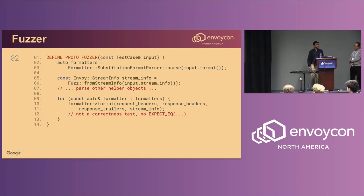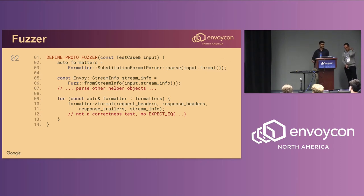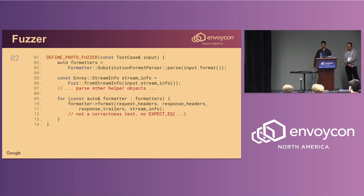Now we fuzz the data path. We translate the shims from the input schema into native Envoy objects like the stream info object, using utilities in the Envoy fuzzer libraries. Once we have all the request and response information, we loop over the formatters and call the format method on each one, passing in request headers, response headers, response trailers, and stream info. Note that we're not checking the final output — this is the fuzz test. We're just generating as many valid inputs as possible and passing them to the library under test, not verifying functional correctness.